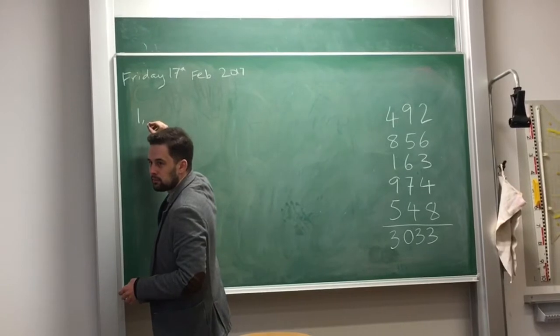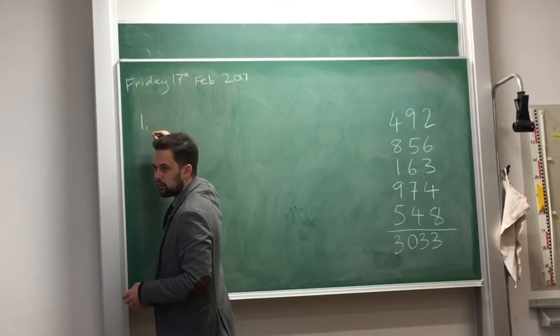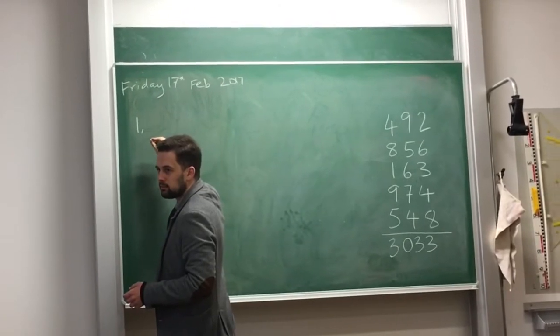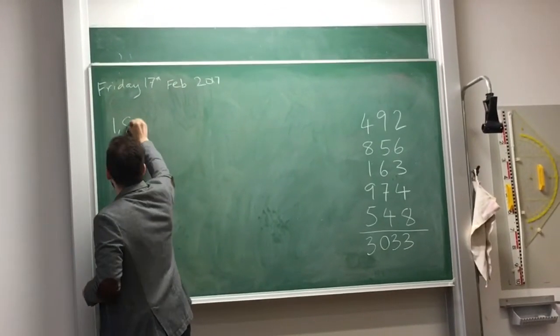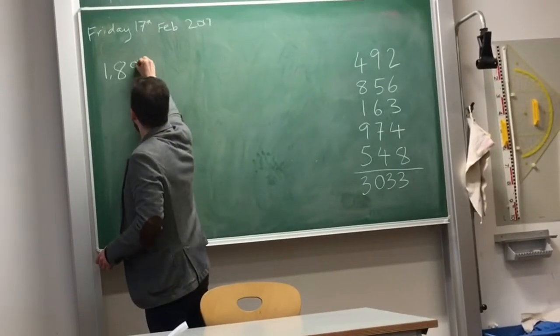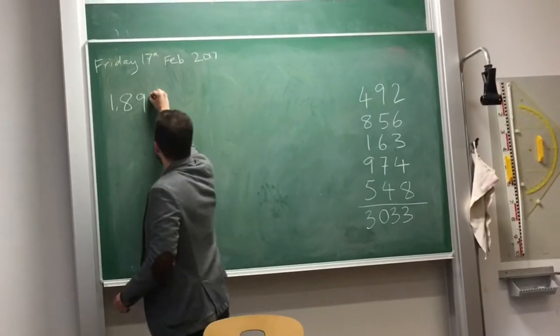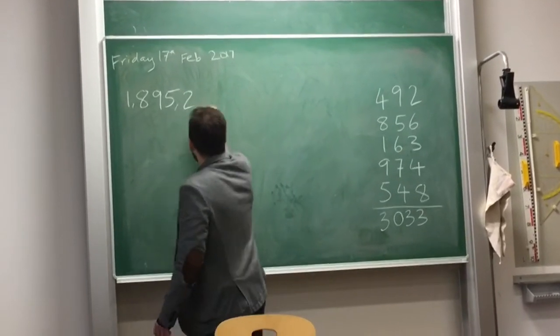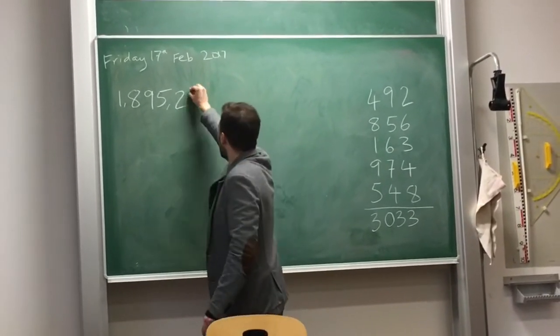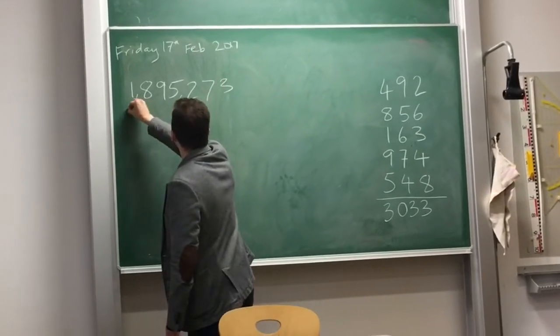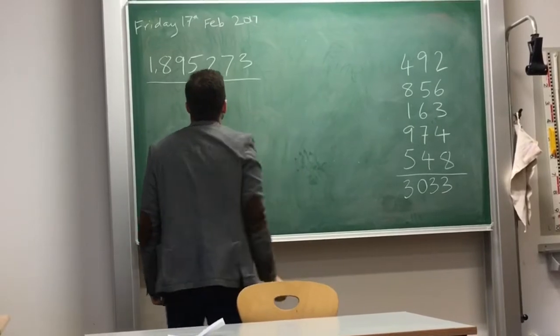Seven? What's that? You're thinking of seven? Do you want to change to a different number? Eight. Eight, okay. Another one? Nine. Nine. Another one? Five. Five. Another one? Two. Two. Seven. Seven. And one more? Three. Three, okay. One million, eight hundred and ninety-five thousand, two hundred and seventy-three.